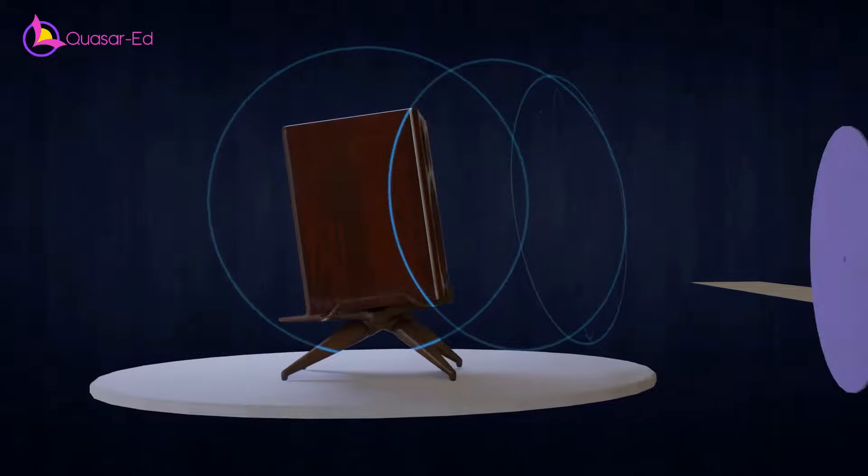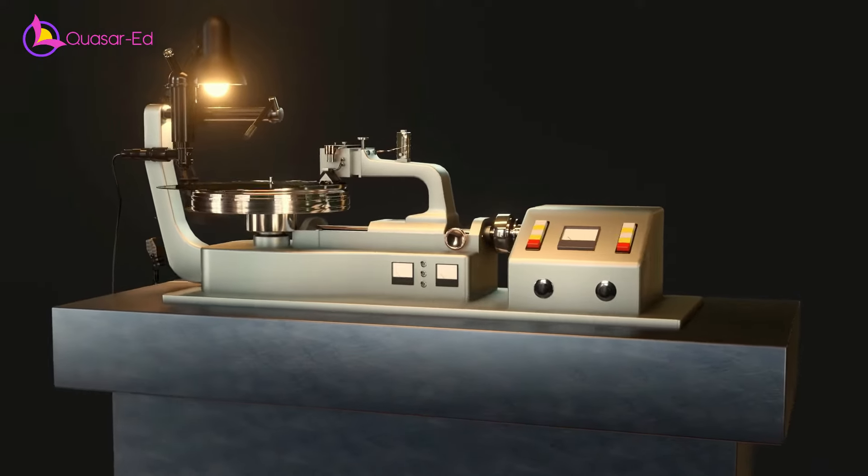Imagine a pen going up and down with the sound waves. If we put a paper underneath, it will draw a line repeatedly. In order to record the sequential motion throughout the time, let's pull the paper strip with some constant speed and you will see the sound waves recording with time. It is the same idea in recording the vinyl disc.